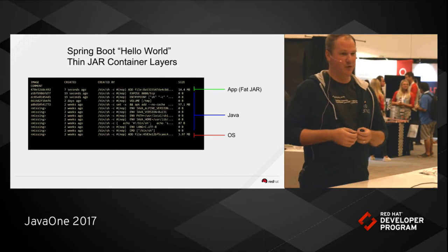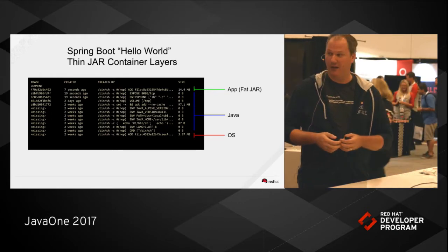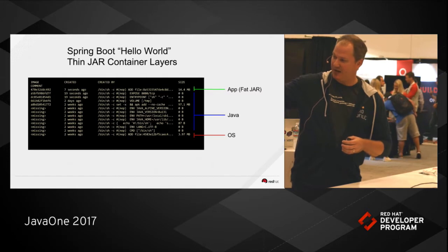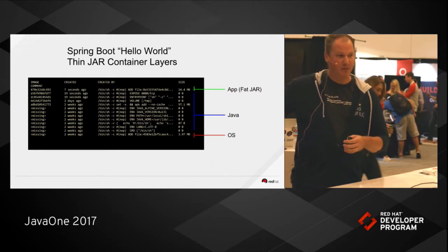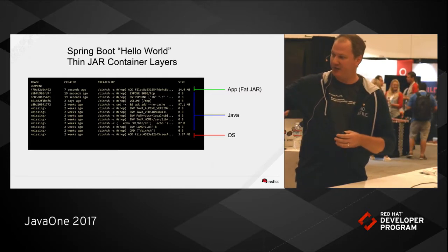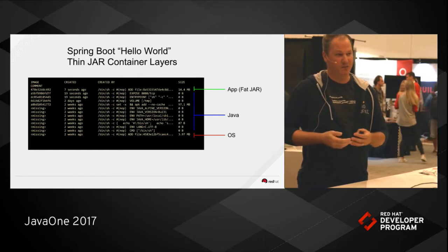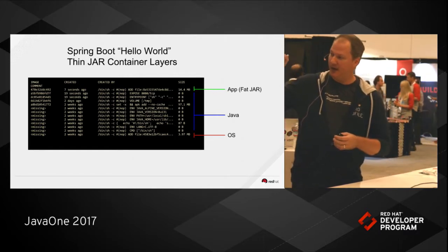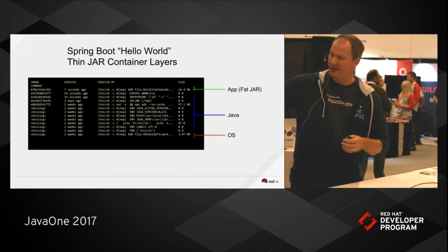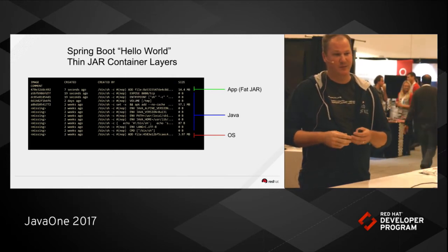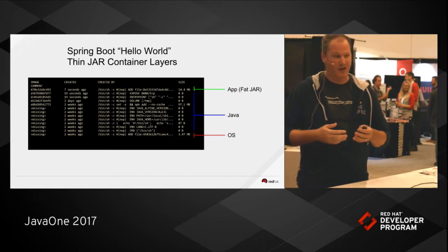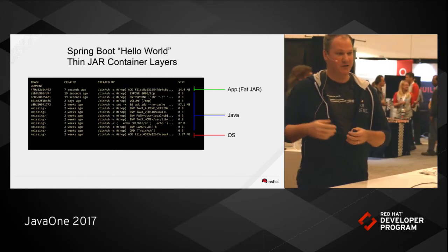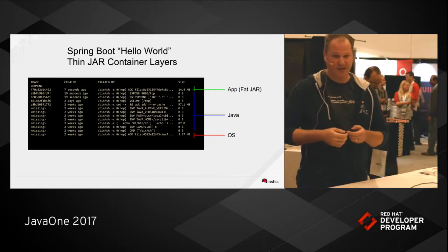Compare that with Spring Boot and its fat jar technology. We still have similar layers — OS, Java, and the app — but they're much smaller. The OS is Alpine Linux, very highly optimized for containers. Java is still sizable at around 100MB, but the application fat jar itself is around 14MB — a notable improvement.